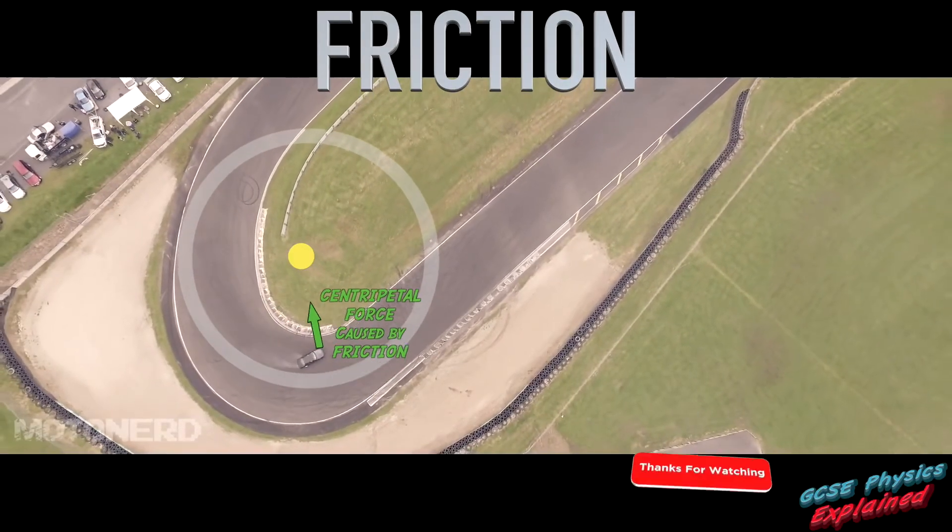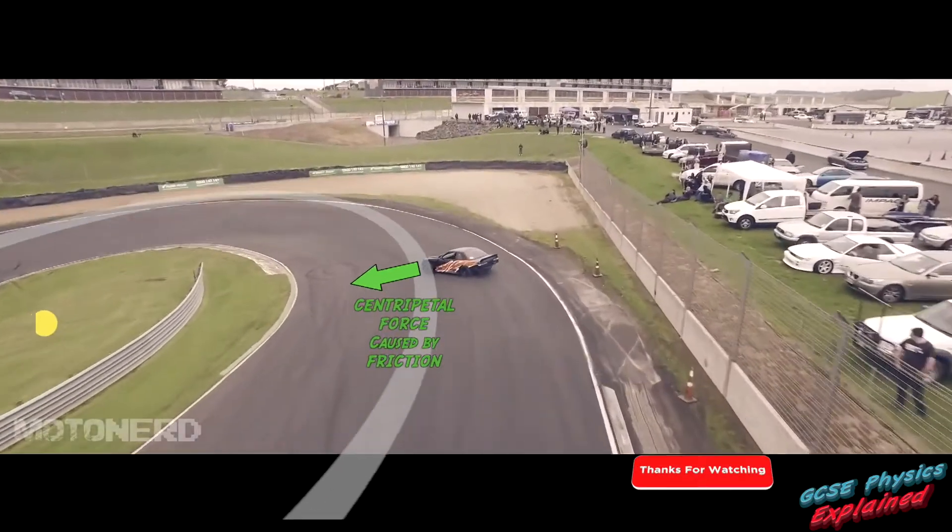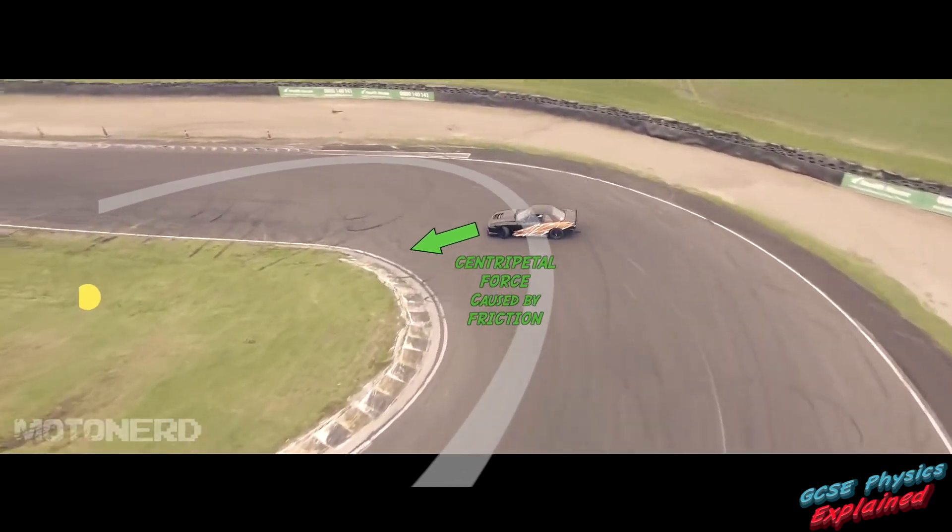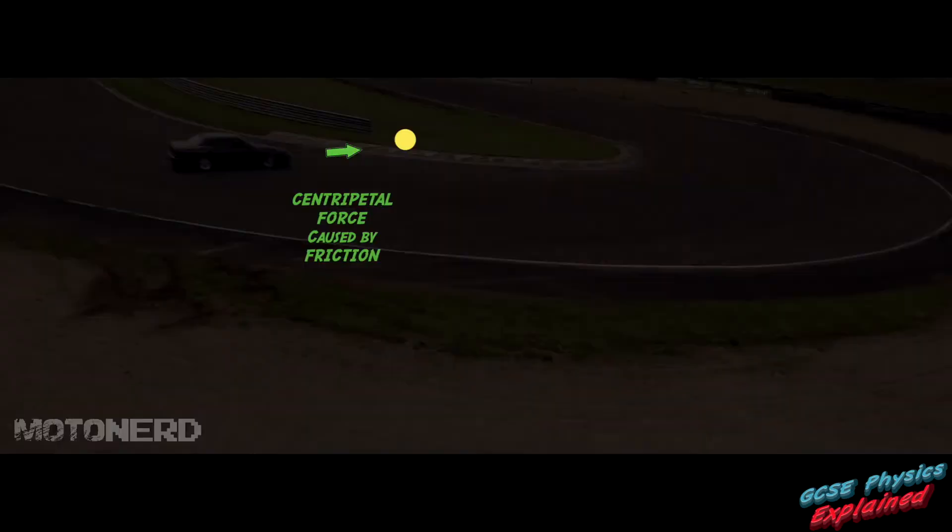Friction. As the vehicle turns, friction between the tyres and the road causes a Centripetal Force to keep the vehicle moving in a circle.